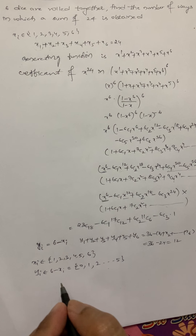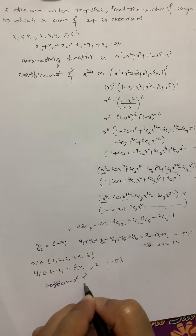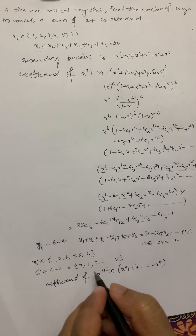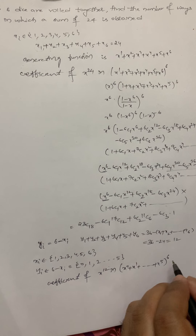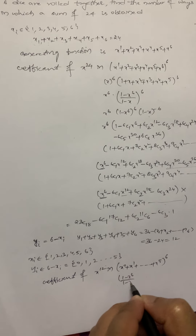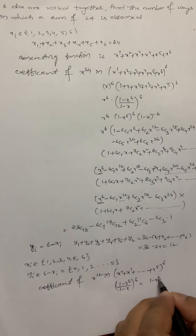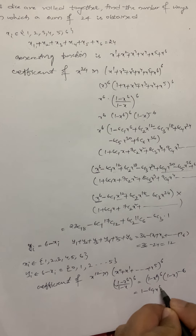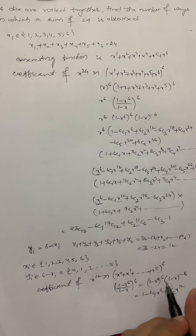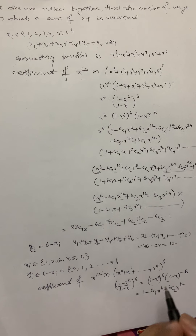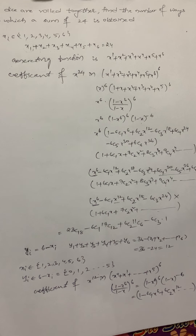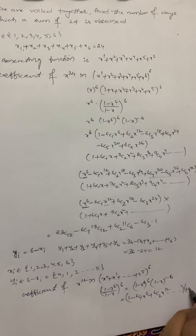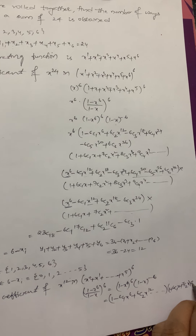We write the new generating function. We want the coefficient of x^12 in (x^0 + x^1 + … + x^5)^6. This simplifies to [(1 − x^6) / (1 − x)]^6 = (1 − x^6)^6 · (1 − x)^(−6). Expanding: (1 − 6C1·x^6 + 6C2·x^12 − …) × (1 + 6C1·x + 7C2·x^2 + 8C3·x^3 + …).